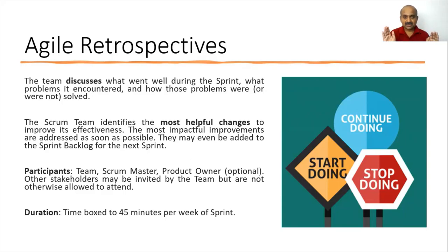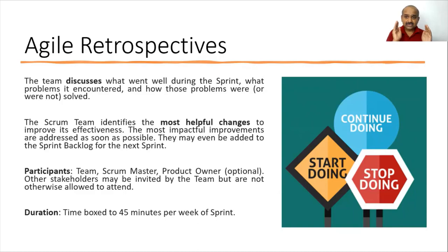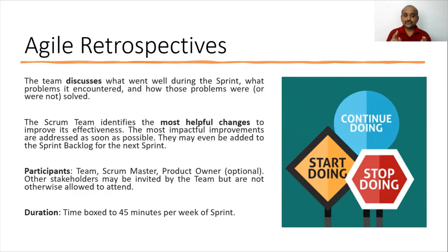The duration is 45 minutes per one week of sprint. If your sprint cycle is two weeks, it is one and a half hours — not more than that. If you are running a one-week sprint, it is 45 minutes. If you are running a four-week sprint, it is three hours. It is time-boxed to that.